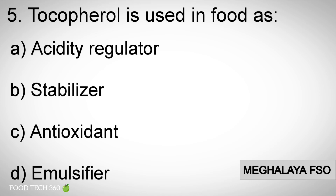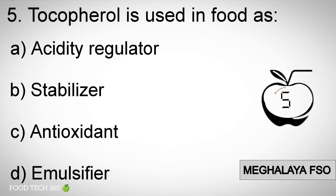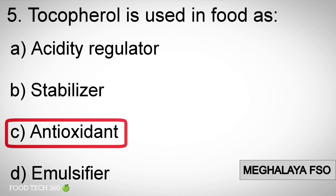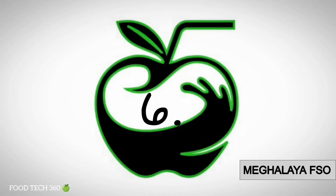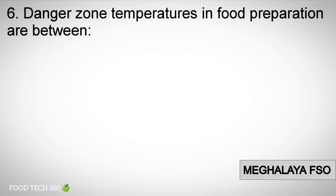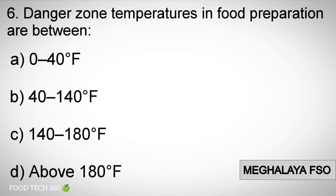Question number five: Tocopherol is used in food as. Options: A) Acidity regulator, B) Stabilizer, C) Antioxidant, D) Emulsifier. Correct answer: C) Antioxidant.